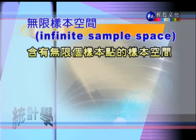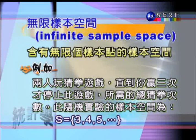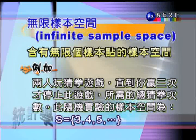另外還有無限的樣本空間，指的是樣本空間內的樣本點有無窮多個。例如兩人猜拳，一直玩到贏了三次才停止，請問總共要出拳幾次？這個樣本空間可以寫成 S = {3, 4, 5, ...}，從3開始是因為最少要出拳三次才能累積三次勝利。如果是4，代表前三次有一次沒贏，第四次才累積到三次，因此樣本空間有無窮多個。